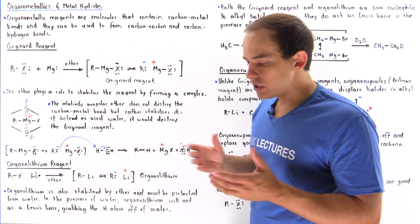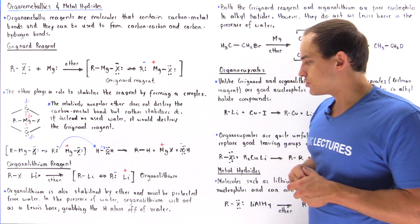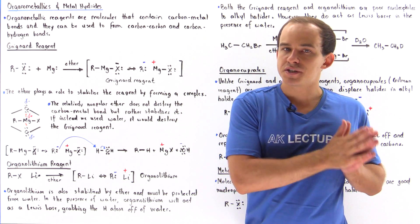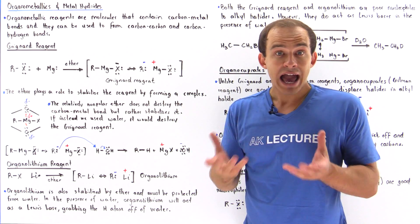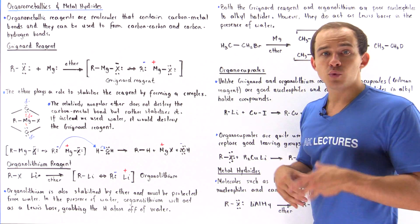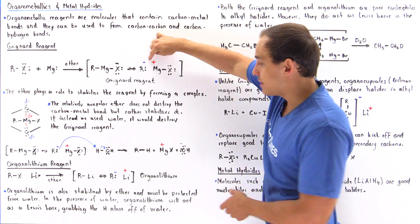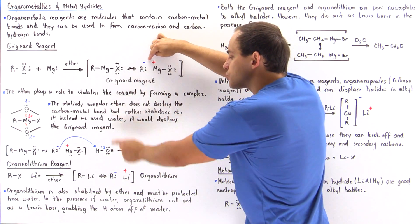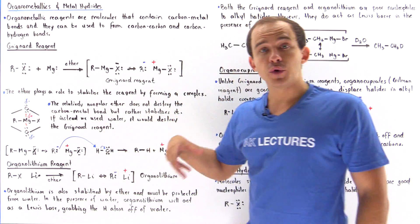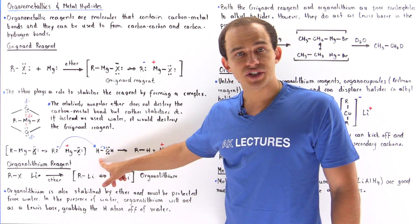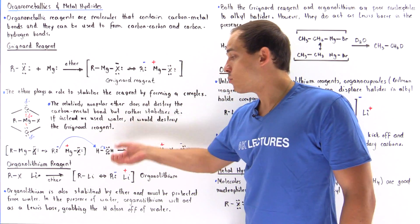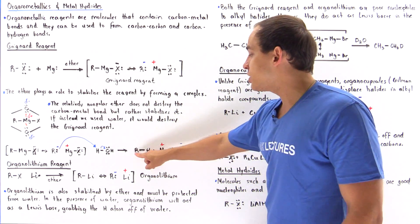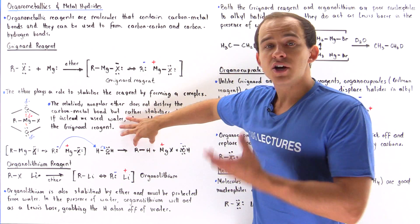What are these reagents actually used for? If we take either the Grignard reagent or the organolithium reagent and mix them in the presence of water, the Grignard reagent will act as the Lewis base while water acts as the Lewis acid, producing a Lewis acid-base reaction that forms a bond between carbon and hydrogen. Looking at the resonance stabilized structure, the R group bears a full negative charge because the carbon contains a lone pair of electrons, and these electrons take the H atom away from water to form the hydroxide, MgX, and the carbon-hydrogen bond.